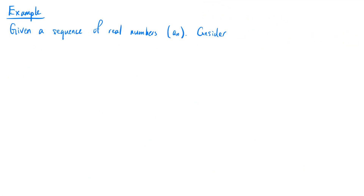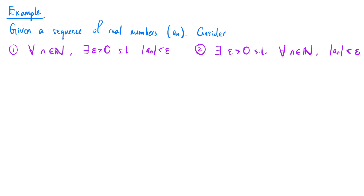Let's look at an example to check our understanding of the terminology. Consider a sequence of real numbers an and two statements. First: for all natural numbers n, there exists an epsilon greater than zero such that the absolute value of an is less than epsilon. Second: there exists epsilon greater than zero such that for all natural numbers n, the absolute value of an is less than epsilon. Notice that the two statements only differ in the order of appearance of n and epsilon.